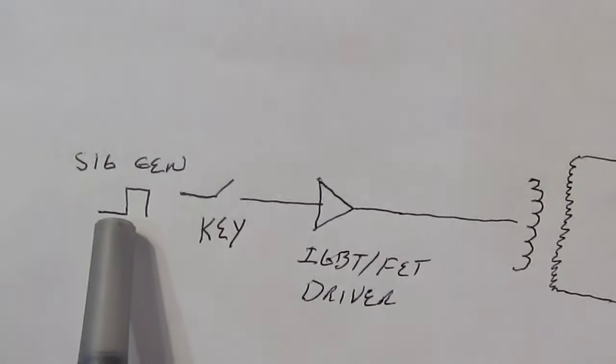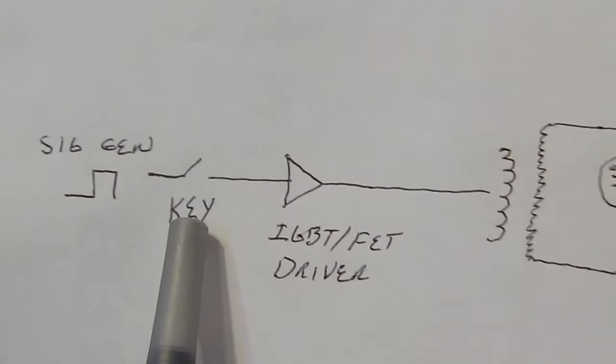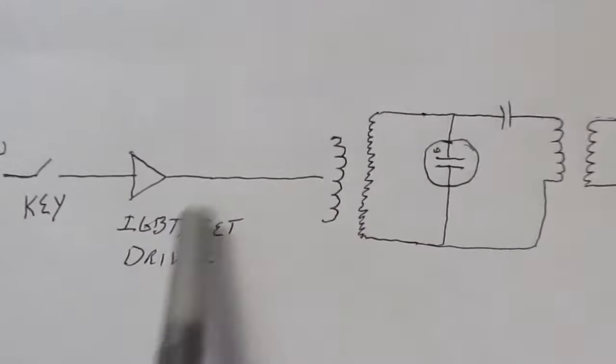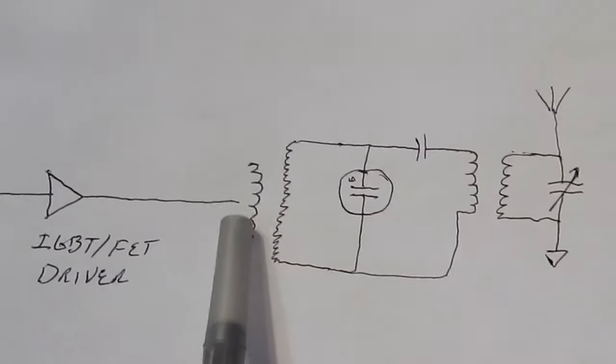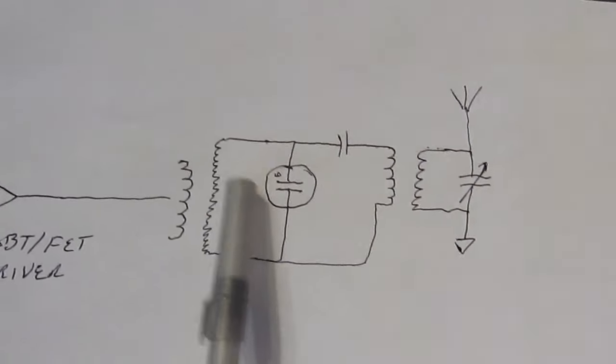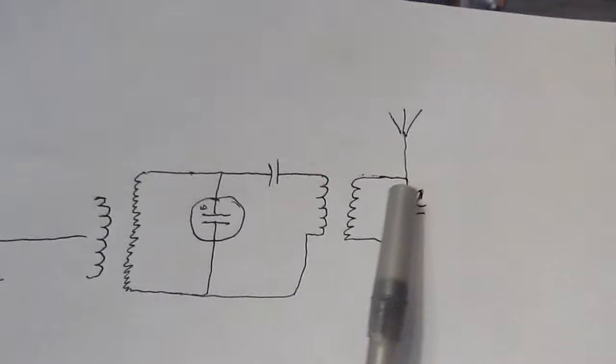So what we have is our signal generator. This is going to put out a square wave. This attaches to our telegraph key. The output of this is driving an IGBT slash FET driver and then this drives the car ignition coil which drives the same circuit that I've shown before with our spark gap directly across the coil. And then we have our two tank circuits.